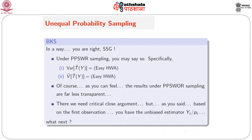Under with replacement sampling, T-hat-y is based on yt by pt. These quantities, for t equal to 1 to n, behave like iid because you are under with replacement sampling. Therefore, their average is an estimate of the total, and variance computation for iid observations, as well as estimation of the variance, follow standard approaches. So these are easy homework assignments, not totally difficult.